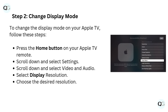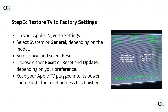Step 2: Change display mode. To change the display mode on your Apple TV, follow these steps. Press the home button on your Apple TV remote. Scroll down and select Settings. Scroll down and select Video and Audio. Select Display Resolution. Choose the desired resolution.